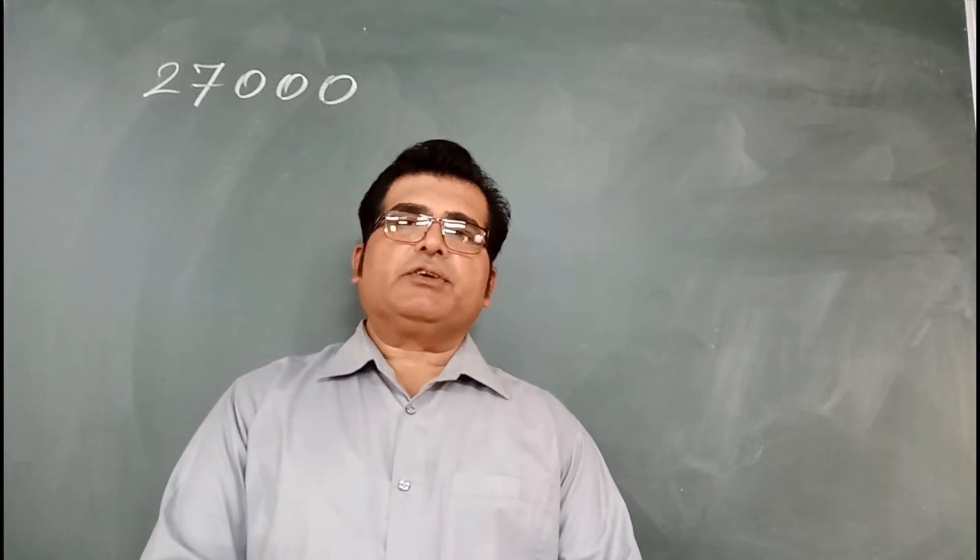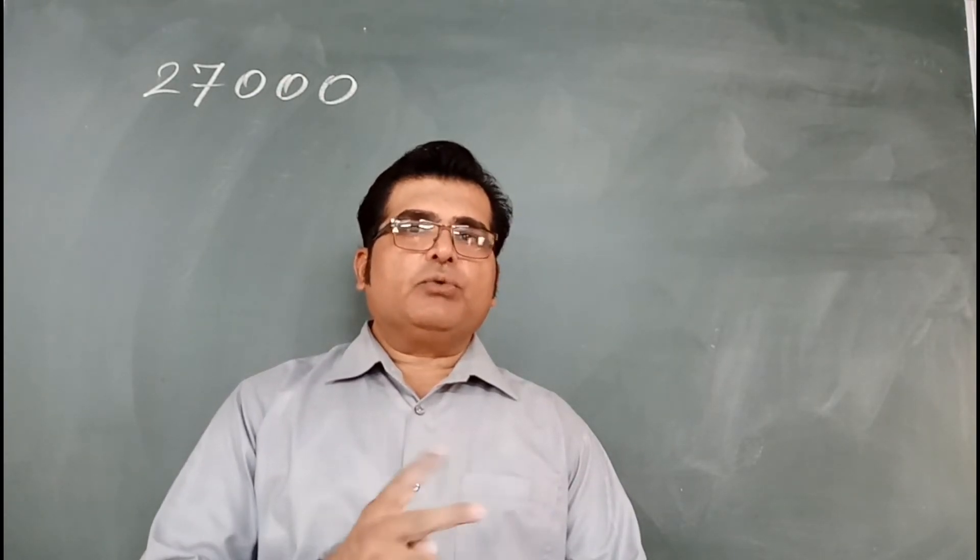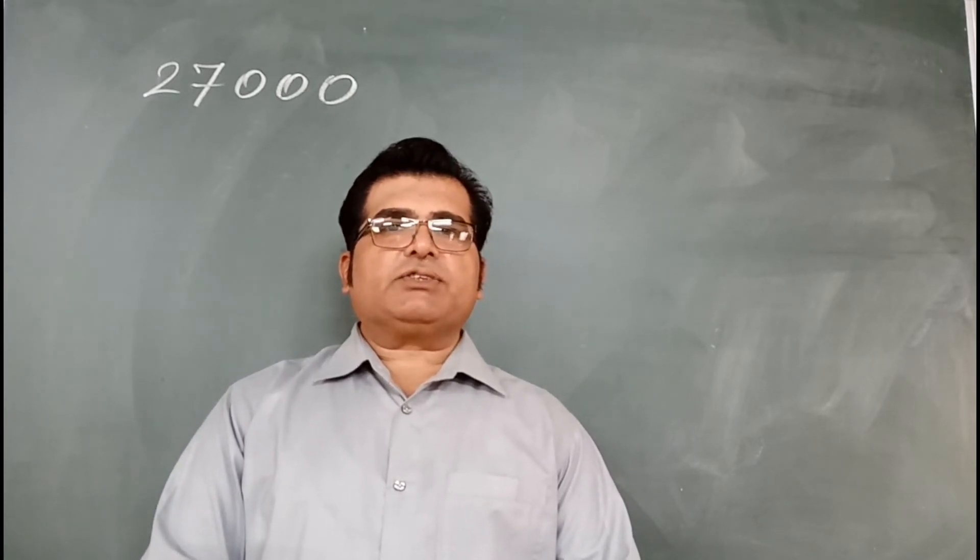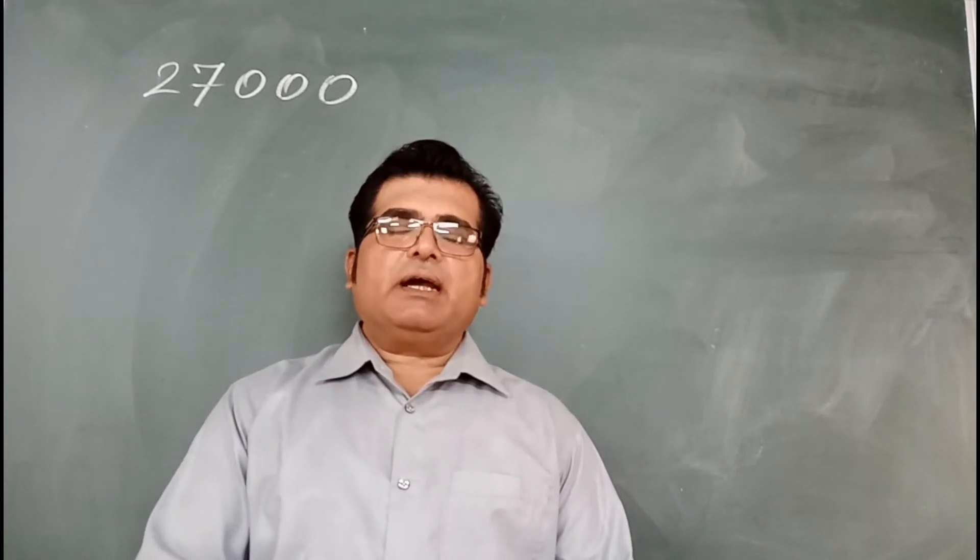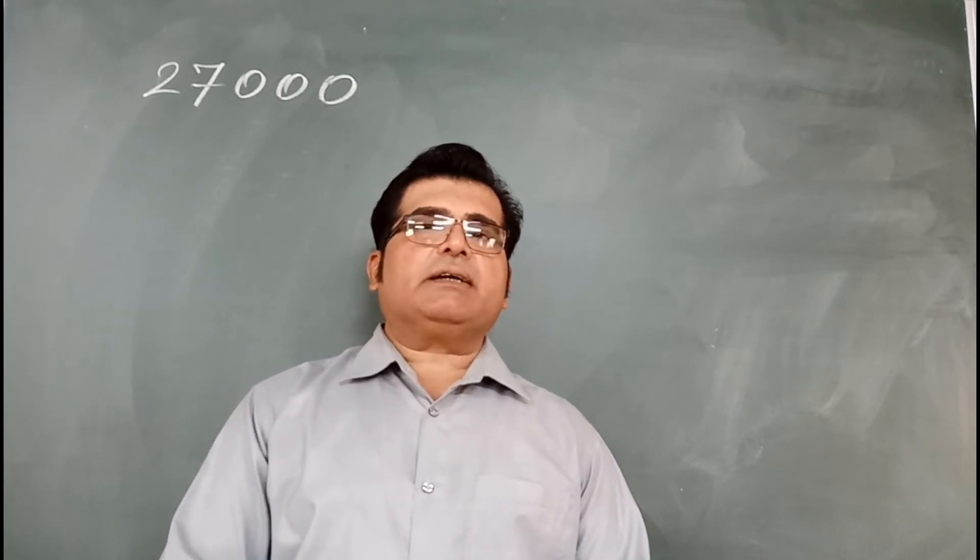Here I'm going to find the cube root of 27,000. There are two methods. One method is to first find the prime factors of 27,000 and arrange them into triplets and get the answer. The second method is...